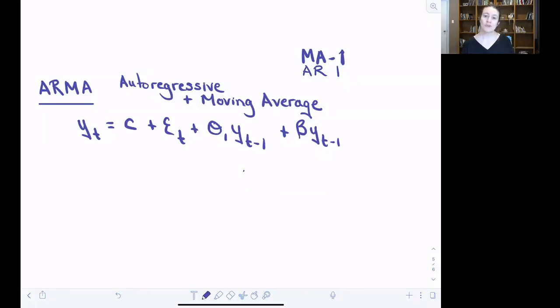We're back to an equation that I showed you before, which is for an ARMA model, which includes an autoregressive and a moving average component.